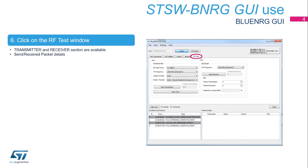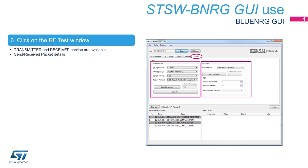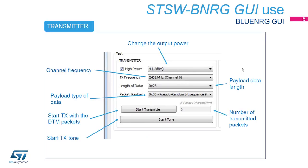Click on the RF Test tab on the right. This GUI section is basically divided into two main portions: Transmitter and Receiver. On the bottom part, the GUI shows sent and received packet details information. On the top right corner, hardware and firmware device information are shown. Let's see on the transmitter side which options are allowed, starting from the top.